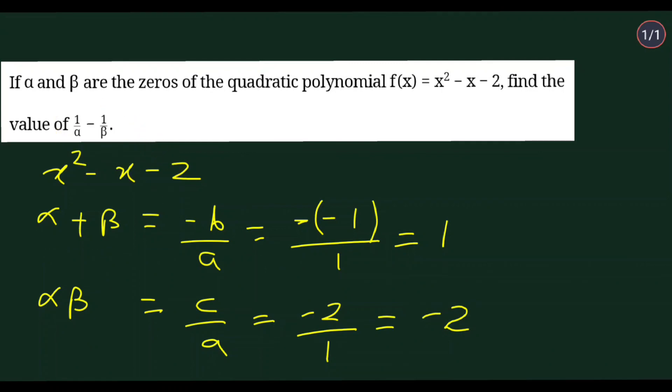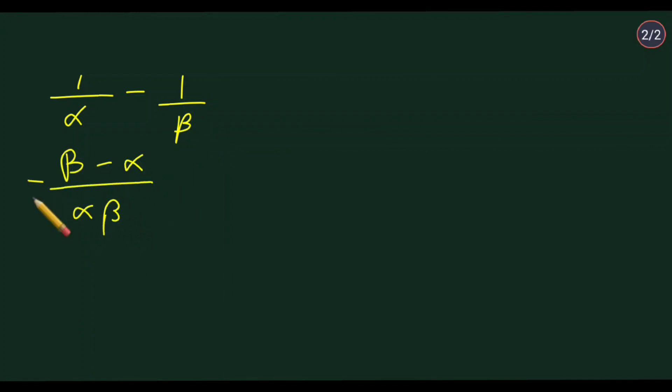Now we proceed further. We have 1 by alpha minus 1 by beta. You can write this as beta minus alpha upon alpha beta. Taking LCM, we get this.